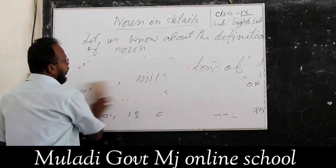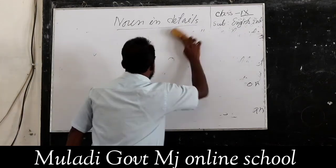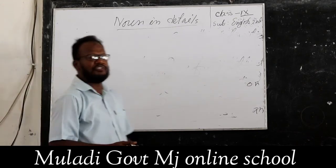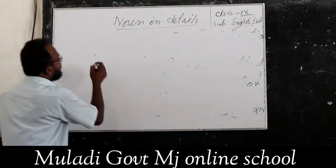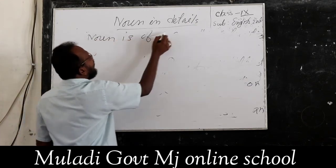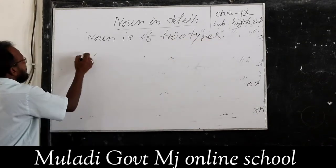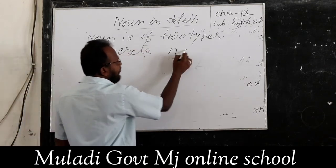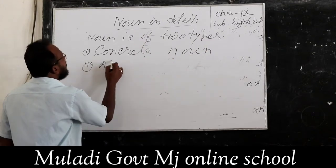Then we have to know the different functions of different kinds of nouns. There are different kinds of nouns in English. Generally, noun is of two types — namely, concrete noun and abstract noun.